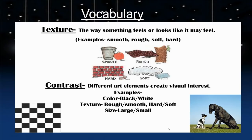Our first vocabulary word today is texture — the way something feels or looks like it may feel. Examples of texture include smooth, rough, soft, and hard. Notice how an artist uses lines and marks to create those textures.